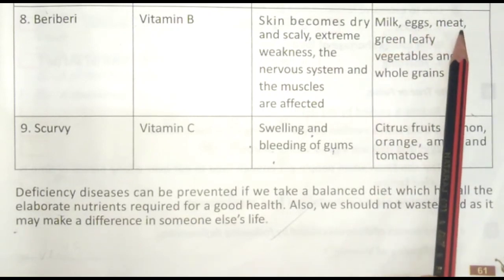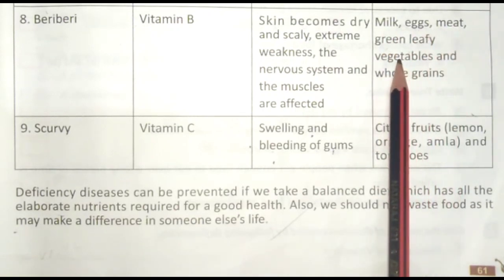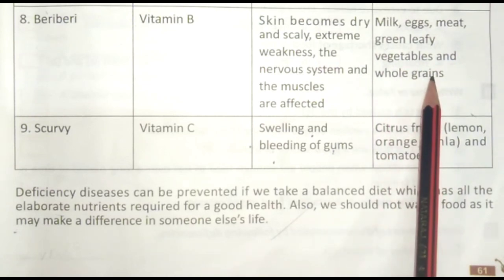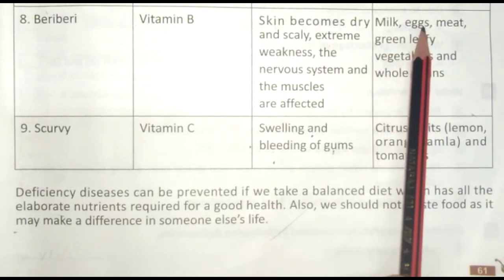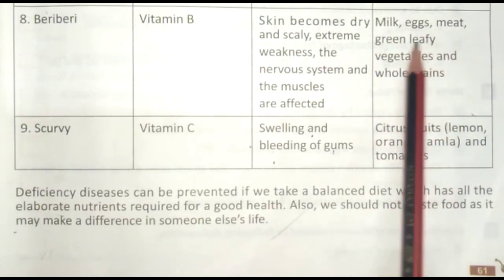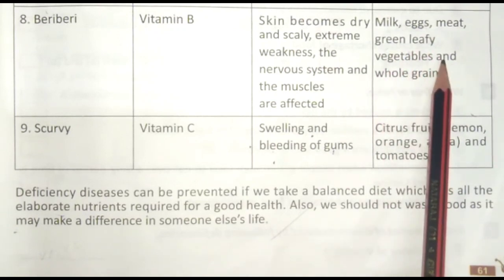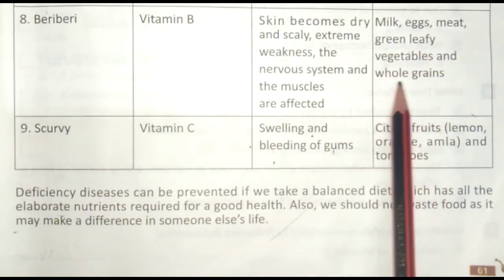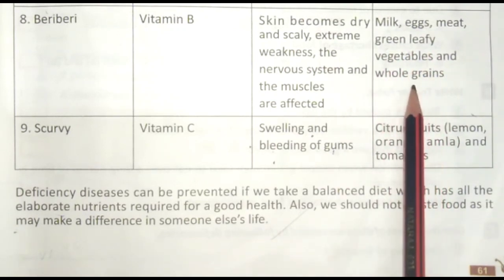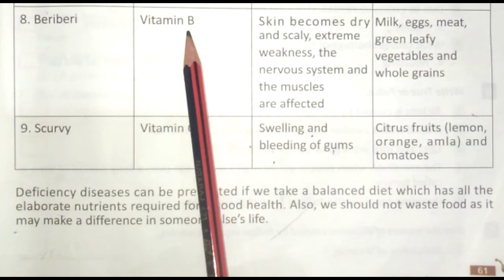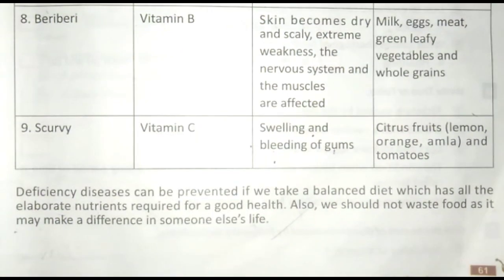Food sources to fulfill Vitamin B deficiency: Milk, Eggs, Meat, Green leafy vegetables and whole grains — Doodh, Ande, Maans, Hari pattedar sabziyan aur saabut anaaj. In bhojan ko khane se Vitamin B ki kami poori ho jati hai.